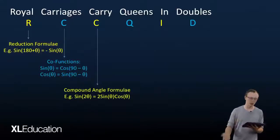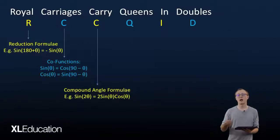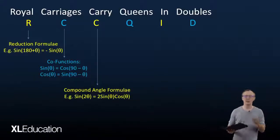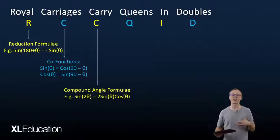The third thing you can look for is your compound angle formulae. So if you have a double angle within a function, you can separate that into something like 2sin(θ)cos(θ) by using your compound angle formulae.